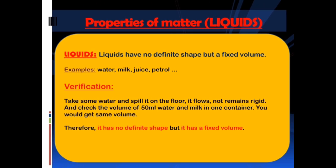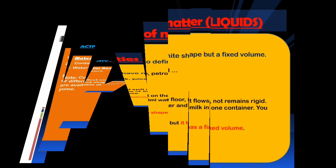Now, properties of matter — liquids. Liquids have no definite shape but a fixed volume. Examples: water, milk, juice, petrol. Verification: take some water and spill it on the floor — it flows, it does not remain rigid. Check the volume of 50 ml of water and milk in one container; you would get the same volume. Therefore, liquids have no definite shape but a fixed volume.